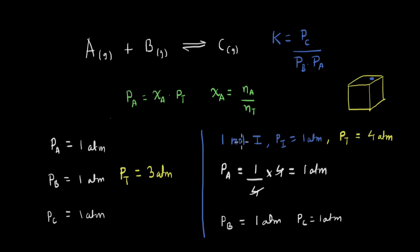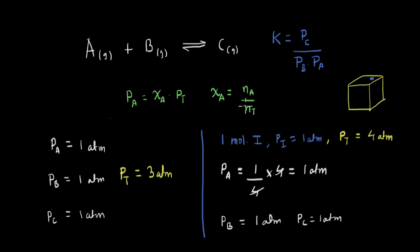Although we took a simple case here, you can try different values of the amount of inert gas or different types of reactions. If you go through this calculation, you'll hopefully arrive at the same result: at constant volume, the addition of an inert gas has no effect on the equilibrium.